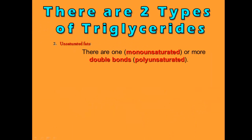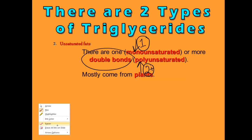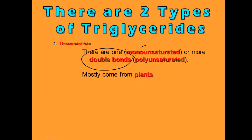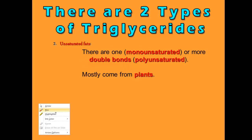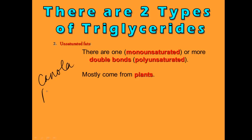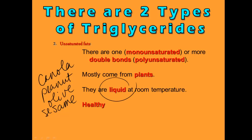When you're talking about unsaturated fat, there are double bonds. An unsaturated fat can be monounsaturated — mono stands for one, meaning one double bond — or it can be polyunsaturated. Poly stands for many, so two or more double bonds makes it polyunsaturated. These fats are mostly from plants. When you're talking about fats from plants, you're usually talking about oils — canola oil, peanut oil, olive oil, or sesame oil. These are the healthy ones.